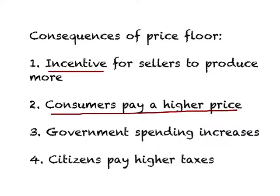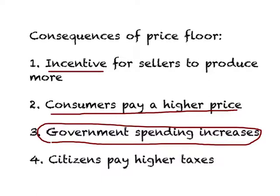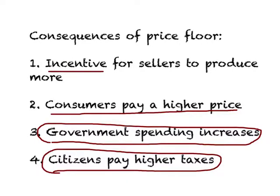In such cases, what governments do — and most developed countries do this — is give a lot of food aid. One reason for giving food aid is, of course, humanitarian. But the second reason is the government ends up with so much surplus food that it does not know what to do. In one case I know of, the Australian government, which had gotten a lot of surplus wheat, tried to give it for free. There were no takers in the world, so the Australian government just burnt that amount of wheat. Whatever the government does with the surplus, in any case it has to pay the farmers, so government spending increases. When government spending increases, how does the government pay for it? They tax citizens of their own countries, so citizens end up paying higher and higher taxes. These are some consequences of a price floor.